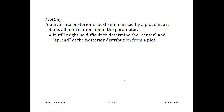The easiest way to summarize a posterior distribution, or at least a univariate posterior distribution, is to simply plot it, because it retains all the information about the posterior distribution. However, even if you do plot the posterior distribution, you still might not be able to develop an intuition about the important distributional characteristics, such as the mean or the variance.